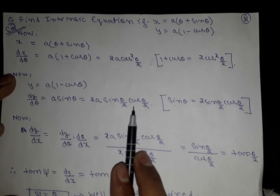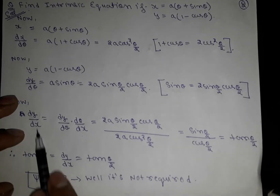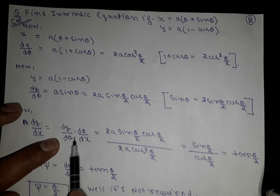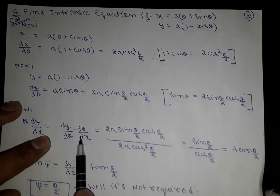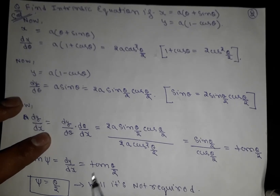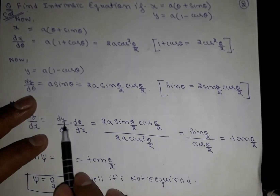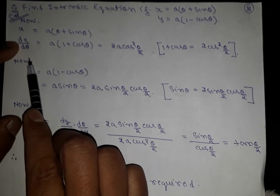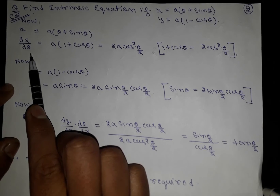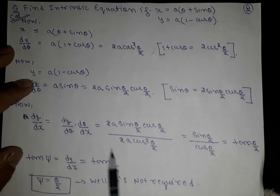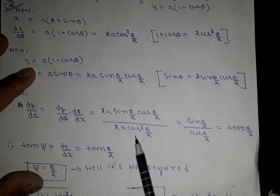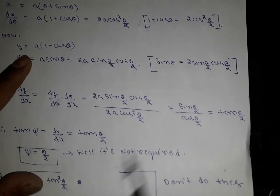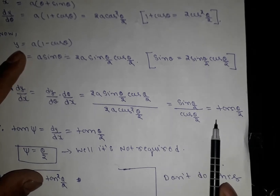Why did we write sinθ as 2sin(θ/2)cos(θ/2)? Because we need to find dy/dx. We find dy/dx = (dy/dθ) / (dx/dθ). Dividing and simplifying on paper: the 2a and 2a cancel, cos²(θ/2) and cos(θ/2) cancel, leaving sin(θ/2)/cos(θ/2), which gives dy/dx = tan(θ/2).